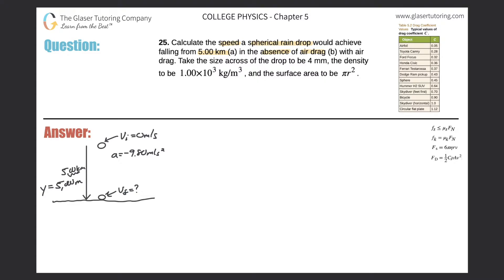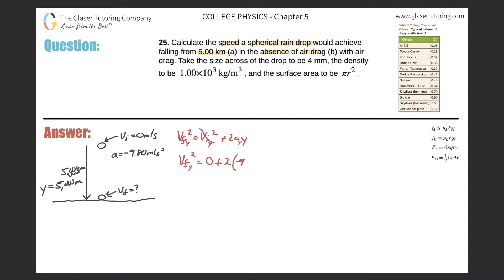We need a formula relating initial velocity, acceleration, final velocity, and displacement. From chapter three: v_f² = v_i² + 2·a·y. We want the final velocity; initial velocity is zero so that term drops out. Acceleration in y is negative 9.80 and displacement is negative 5,000 — if you don't enter it as negative, taking the square root will give an undefined answer.